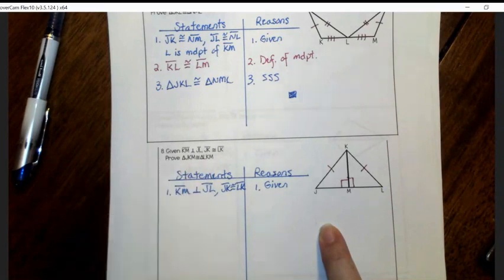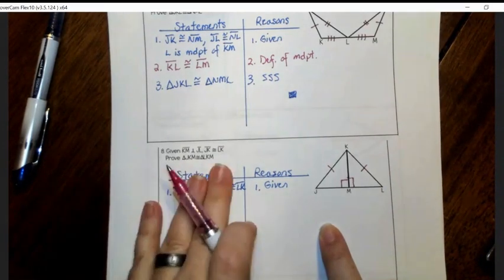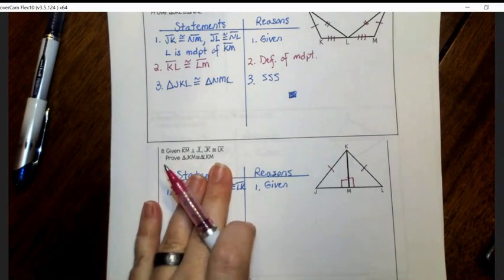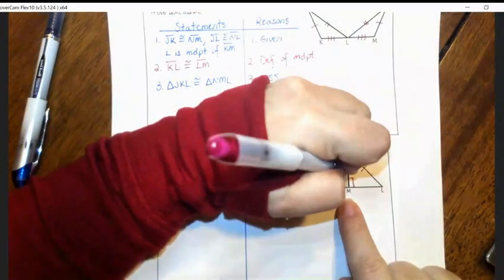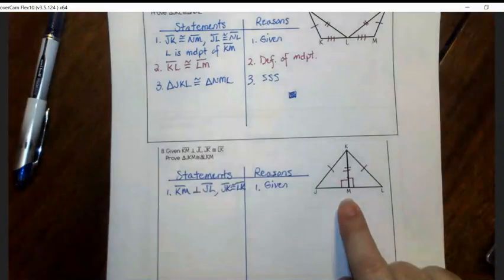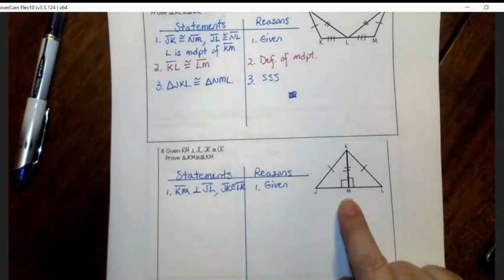And we need to prove that those two triangles are congruent. So I marked the given information. Then I should ask myself if there's anything else I can mark. And in this one, they share a side so I can mark that that is congruent as well.